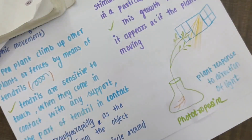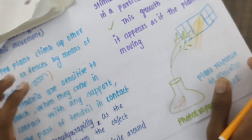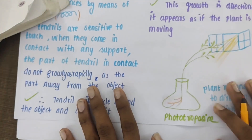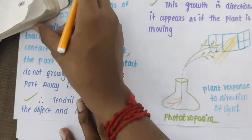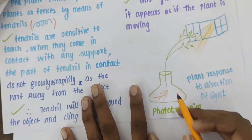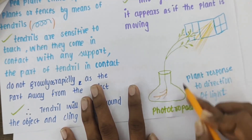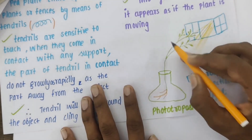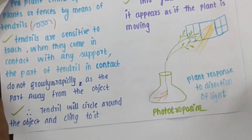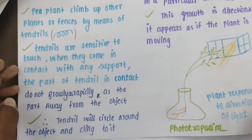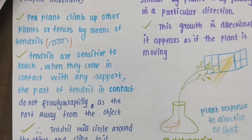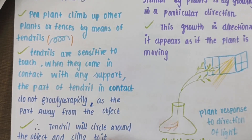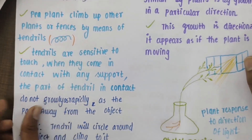One direction towards the stimuli is positive, and moving away is negative. Phototropism is nothing but a growth movement in response to sunlight. Root is negatively phototropic — it moves away from the sunlight. But the shoot moves towards the sunlight, so it is positively phototropic. The movement of the plant part towards or away from the sunlight is the response called phototropism.